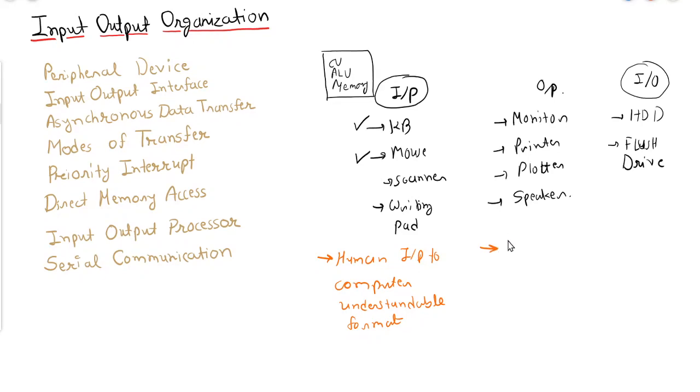Output devices are the reverse of this. They are used to convert the computer format, means binary format, into human understandable format. So whatever output, let's say cursor movement we are using, it is being manipulated by CPU in binary format, but it will be converted into human understandable format.